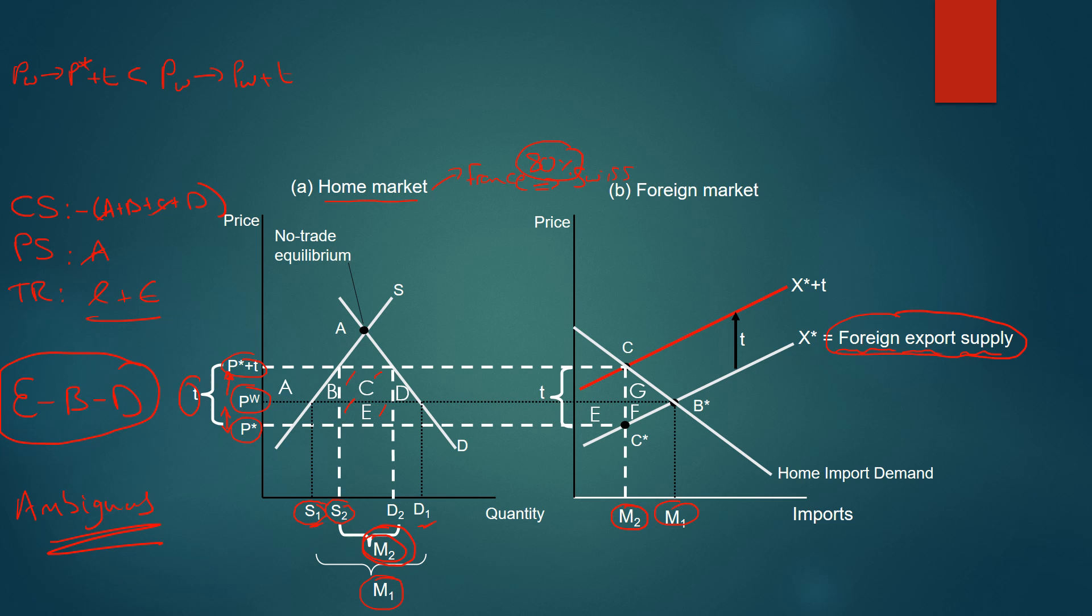So in the small country case, we said it was unanimously bad. In this large country case, we can't say with much certainty if it's going to be positive or if it's going to be negative.